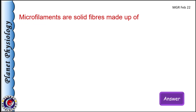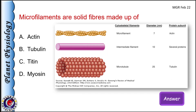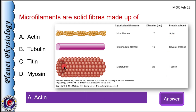Microfilaments are solid fibers made up of: A) actin, B) tubulin, C) titin, and D) myosin. Microfilaments are solid cytoskeletal elements made up of actin, so option A is the answer. Microtubules are hollow structures made up of alpha and beta tubulin. Intermediate filaments are made up of several proteins. Titin is present in skeletal muscle, connecting Z lines and M lines, keeping myosin filaments in place.